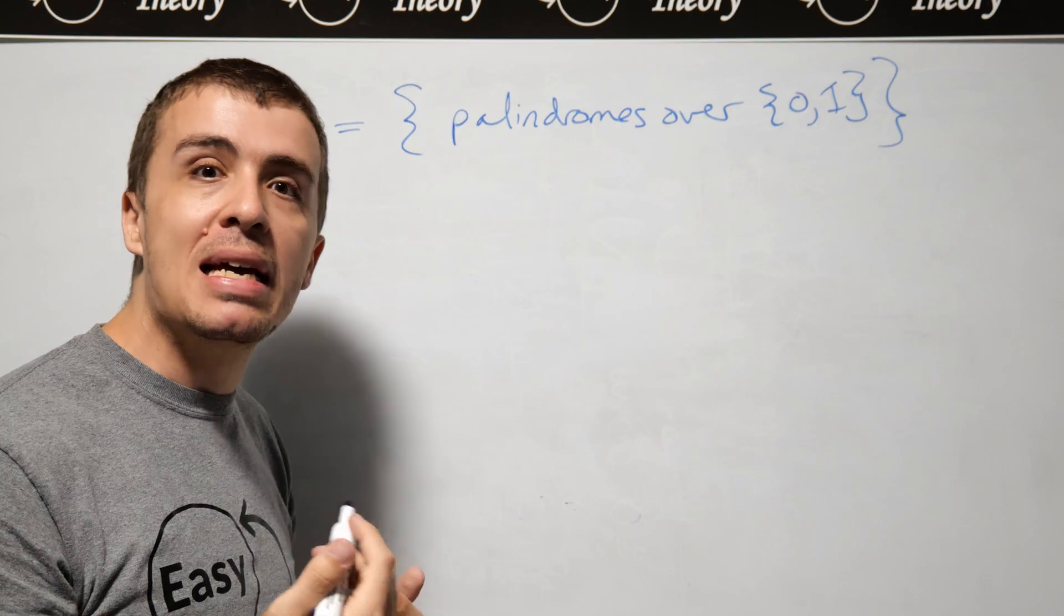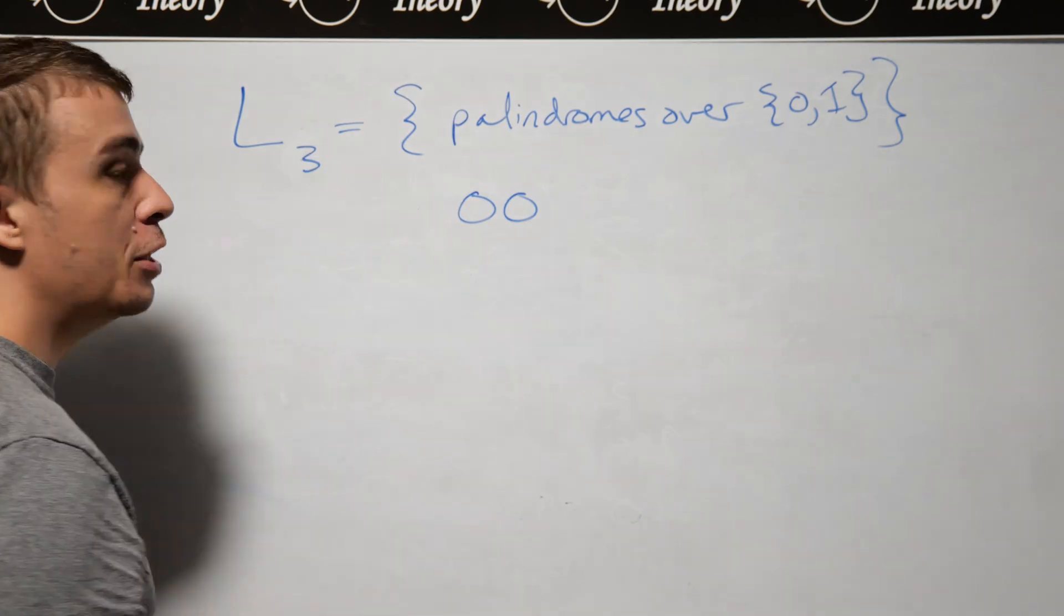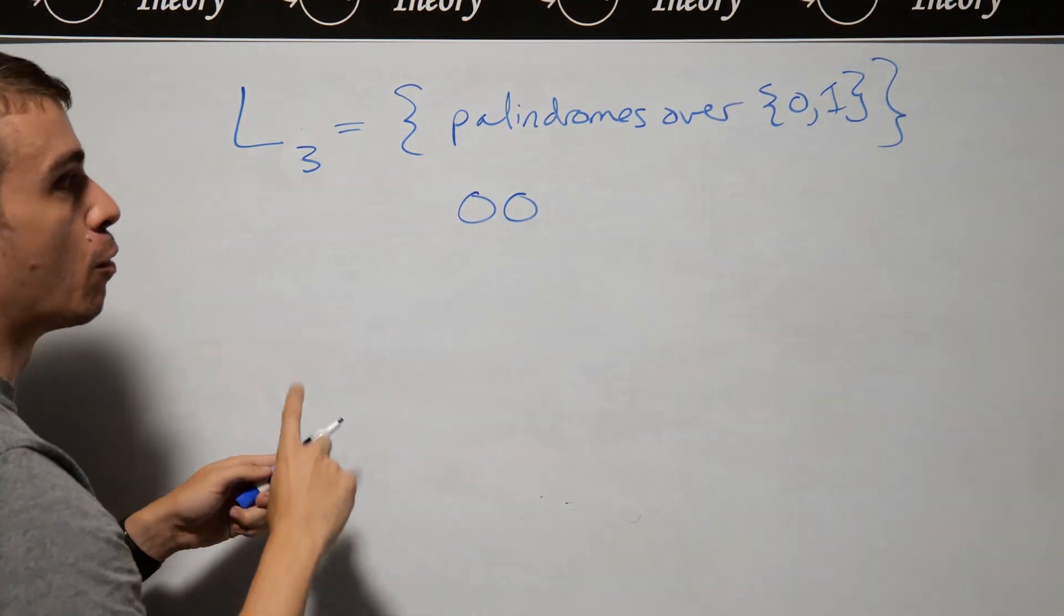Recall that a palindrome is a string that is exactly the same forwards as backwards. As an example, if we have 00, that's a palindrome because it's the same one way as the other.